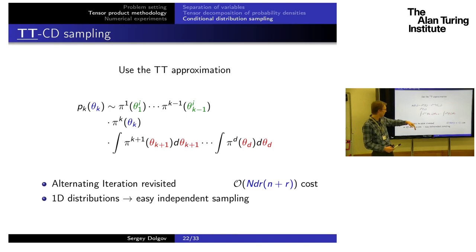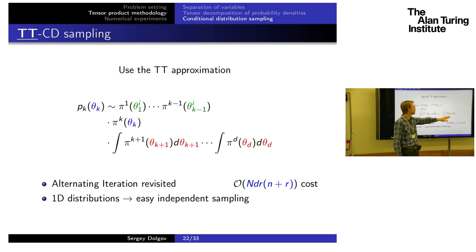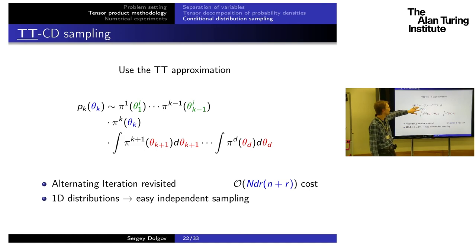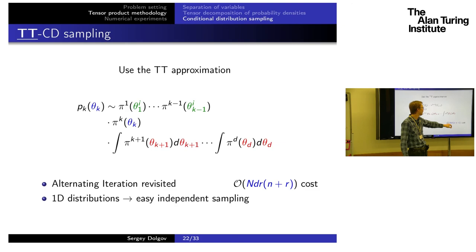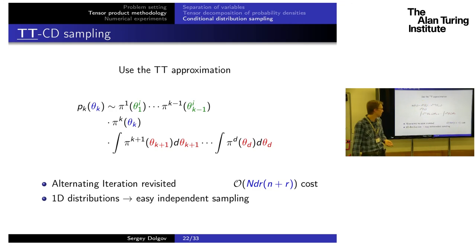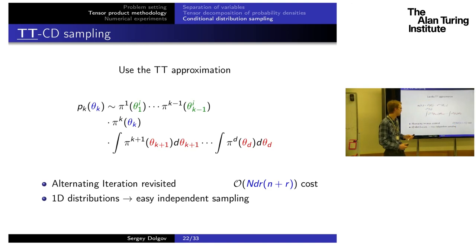If you can compute these integrals analytically, that's good, but we want a numerical scheme — and this is exactly where we use the tensor train approximation of the probability density. If you have a tensor train decomposition of pi, then conditioning the first k-1 variables is nothing else than univariate conditioning of the TT blocks, and integrating the last d-k variables is just a set of one-dimensional integrations. We have a single TT block in between, multiplied by these conditionals and integrations, giving our univariate density. The cost ends up linear in the number of samples, linear in the dimension, quadratic in the rank, and linear in the one-dimensional grid size.